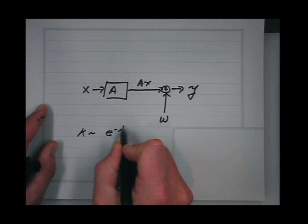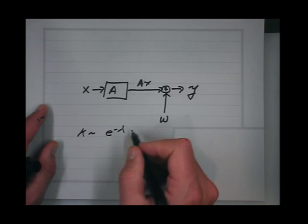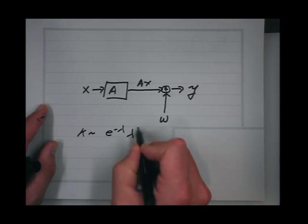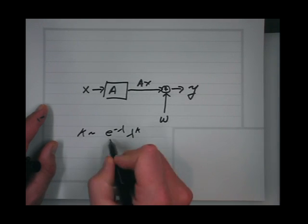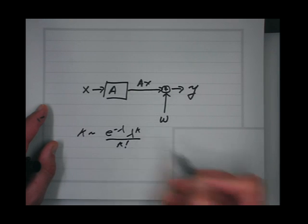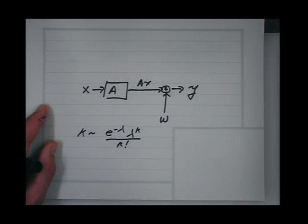It's e to the minus lambda times lambda to the k over k factorial. Is that right? Yes.